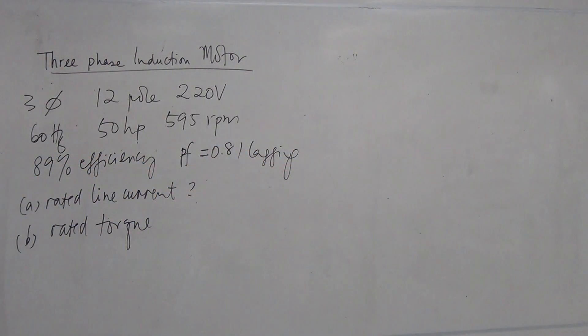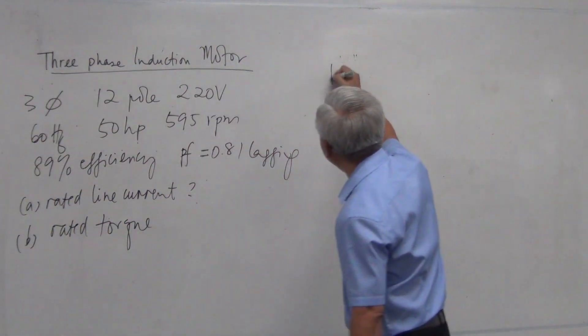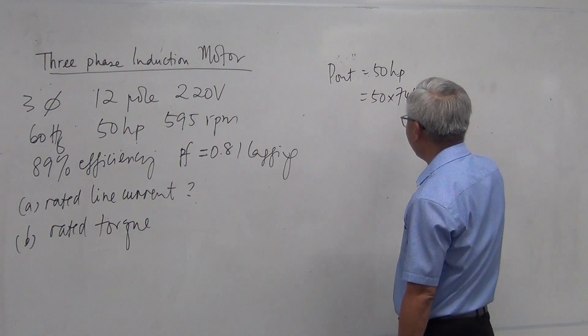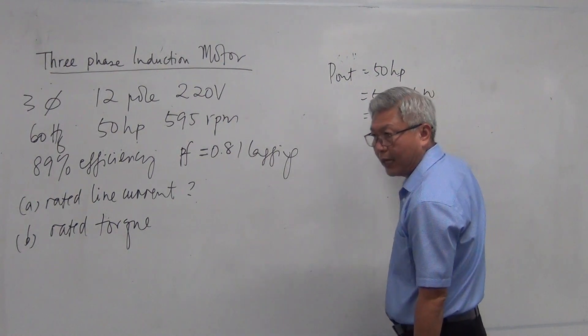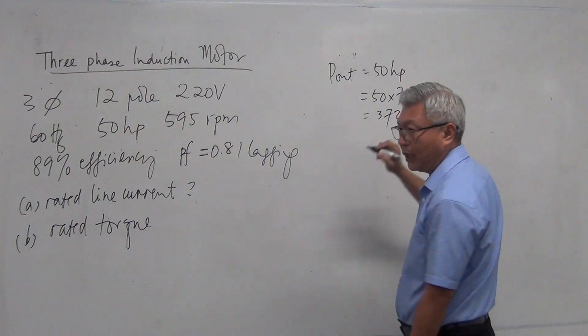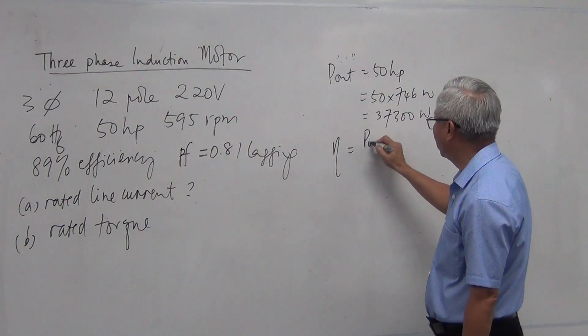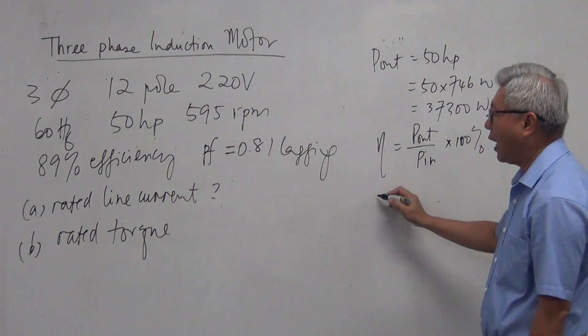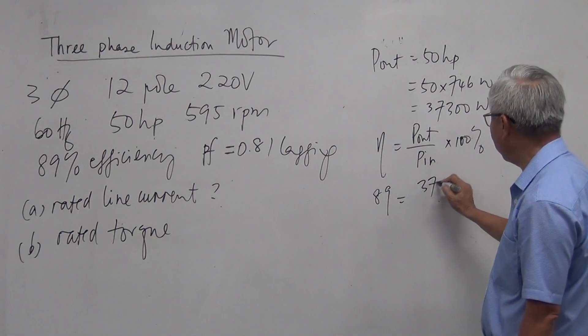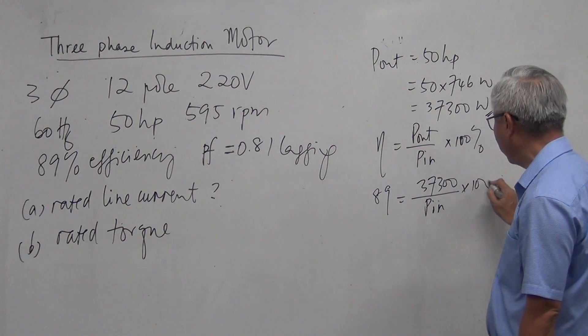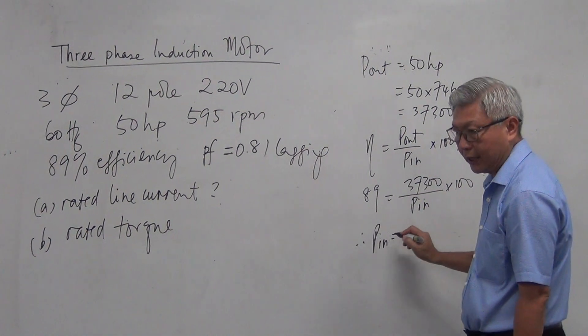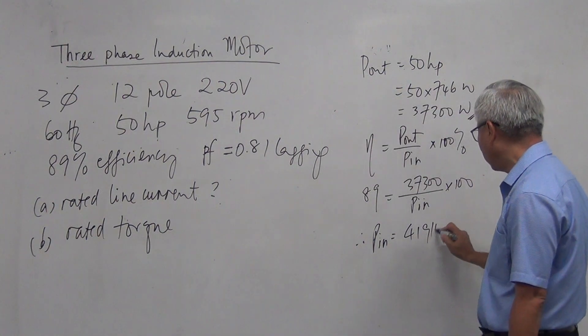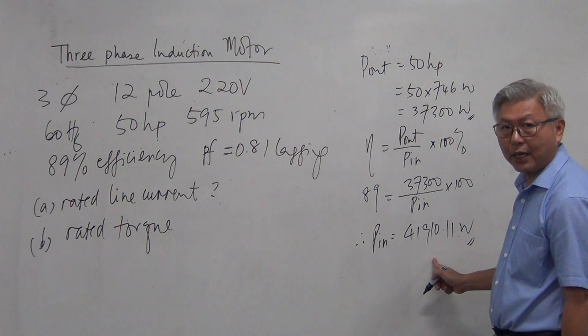Alright. Start with the efficiency first. So, the output power is equal to 50 horsepower. Make it into SI unit times 746 watts. And that is equal to 37,300 watts. And efficiency, efficiency is output divided by input times 100%. So I have 89 percent, that is equal to 37,300 watts divided by input power multiply 100. So therefore, input power can be calculated. And input power is equal to 41,910.11 watts. So I've already got my input power.